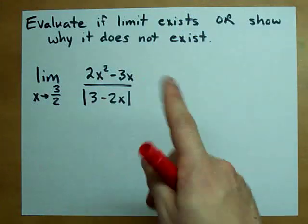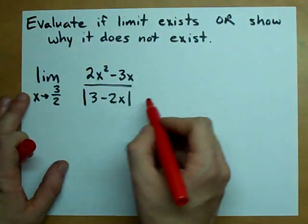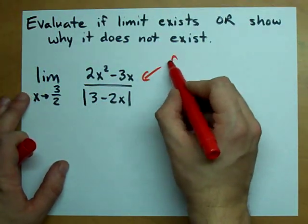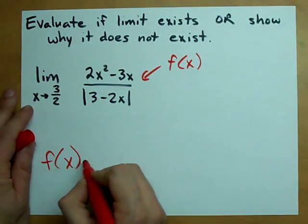In any case, we need to deal with this absolute value. Here's how that happens. I'm going to let this whole thing be f of x just so I don't have to write it out for you again.